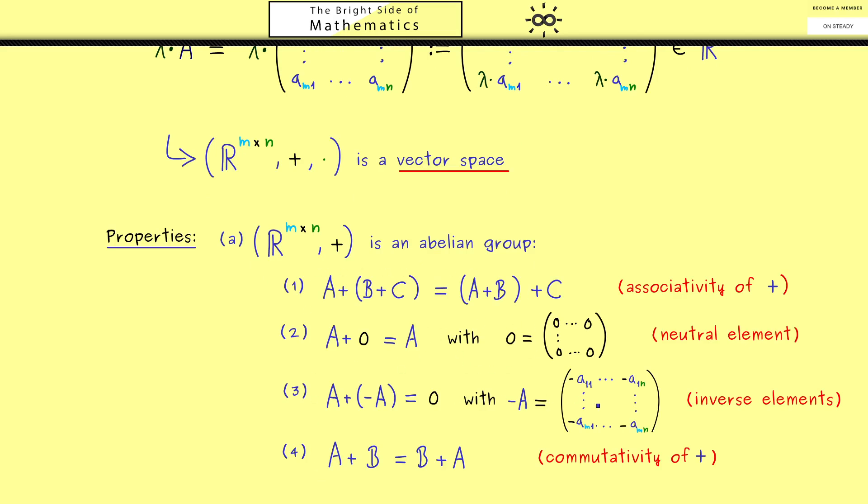So it's not hard at all to check all these rules. Maybe one important thing to mention here is that 0 stands for the 0 matrix, which is the neutral element with respect to the addition. And the other thing is the inverse we get by putting in a minus sign at each entry.